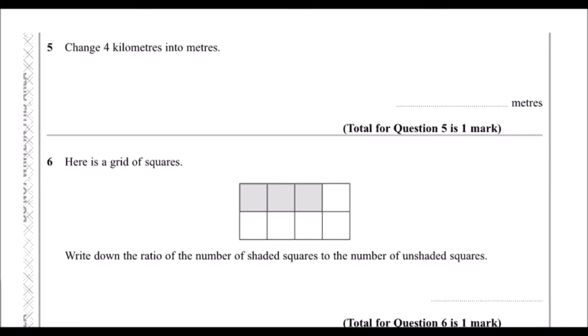Question 5: change 4 kilometres into metres. Whenever we have 'k' or 'kilo', that means a thousand, so it's actually 4,000 metres. To change from kilometres to metres we can also multiply by 1,000, so 4 times 1,000 is 4,000.